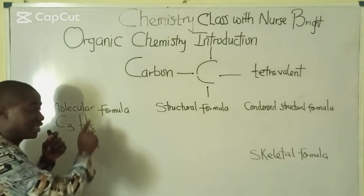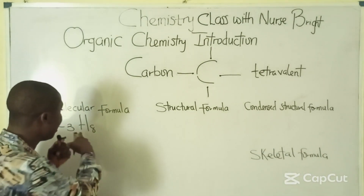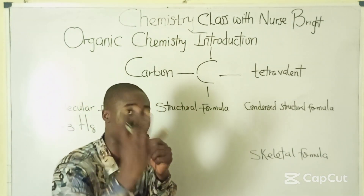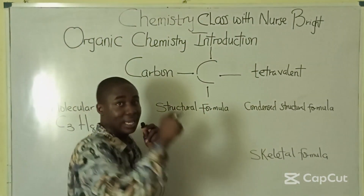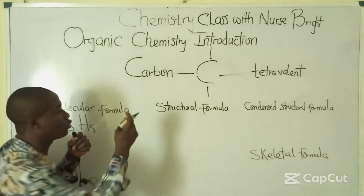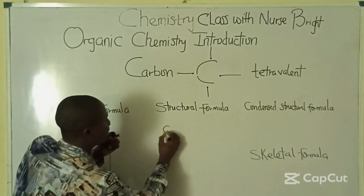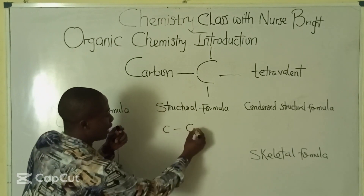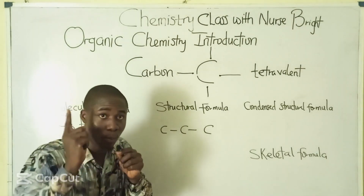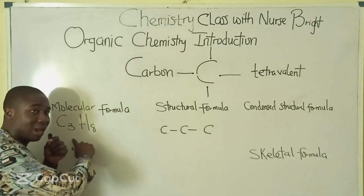Now, how do we write the structural formula of this molecule C3H8? Recall that carbon is tetravalent, meaning it allows just four bonds to surround itself. How many carbons are we having? We're having three carbons in this compound. So to write the structural formula, we simply place carbon bonding to carbon and bonding to another carbon, because we're having three carbons.